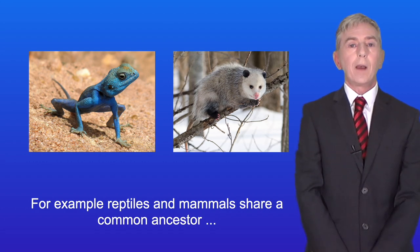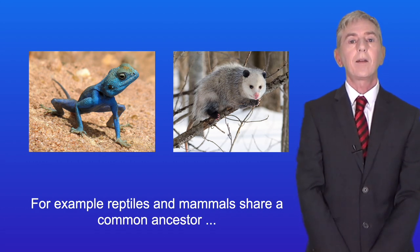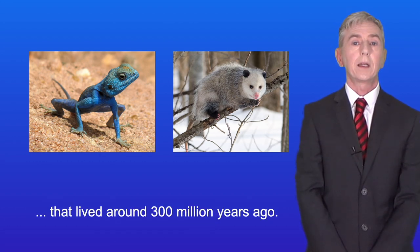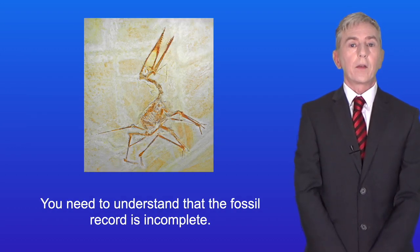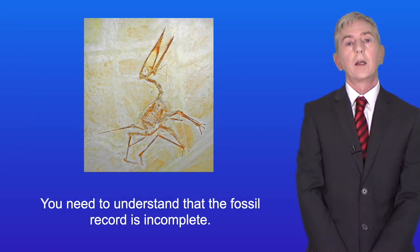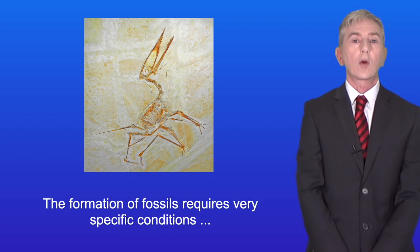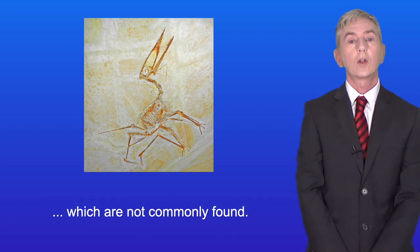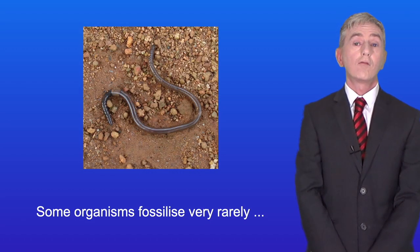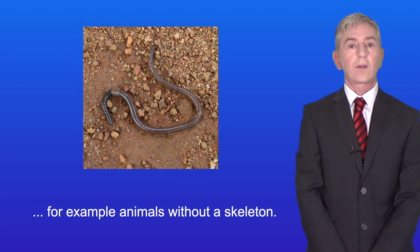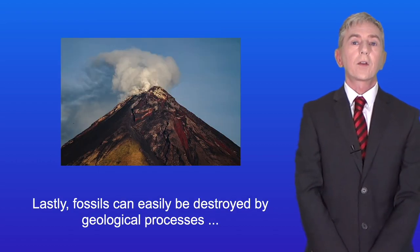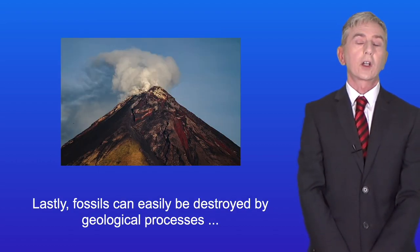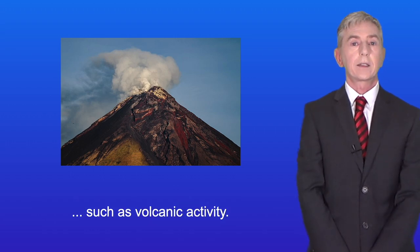For example, reptiles and mammals share a common ancestor that lived around 300 million years ago. You need to understand that the fossil record is incomplete. The formation of fossils requires very specific conditions which are not commonly found, and some organisms fossilize very rarely — for example, animals without a skeleton. Fossils can also be easily destroyed by geological processes such as volcanic activity.